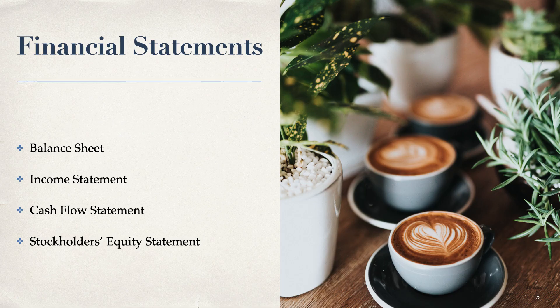Our financial statements: we really have three plus a fourth one. The first three we always have: we always have a balance sheet, we always have an income statement, we always have a cash flow statement. For a for-profit company we would also have a stockholders' equity statement. We would not have that if we had a non-profit company or a government agency.